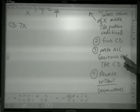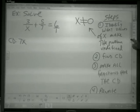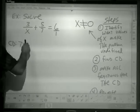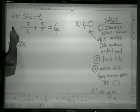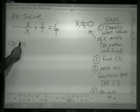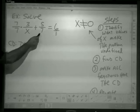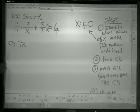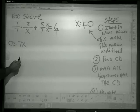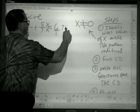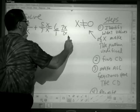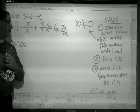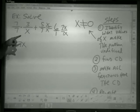Next step. Make all the fractions have the common denominator. So just like we did before, we're going to go through and we're going to multiply by what's missing. So this is missing a 7. This is missing an x. This is missing the 7 and the x. Make all the fractions have the common denominator.